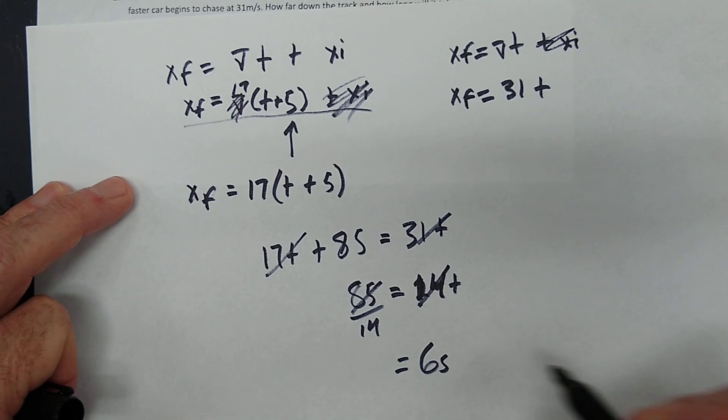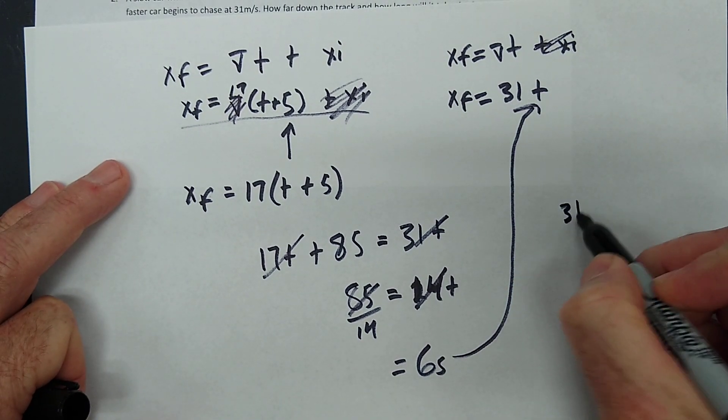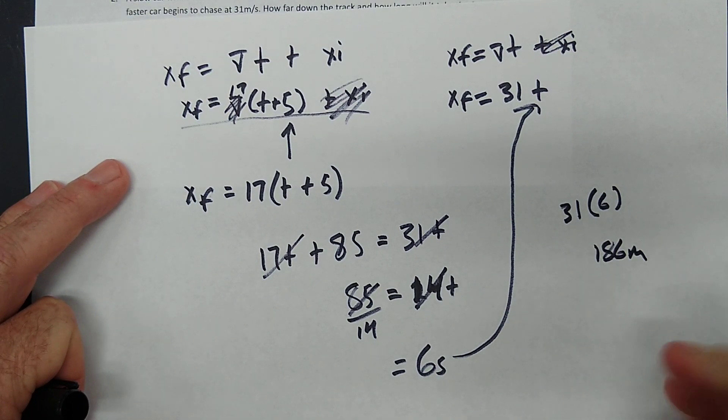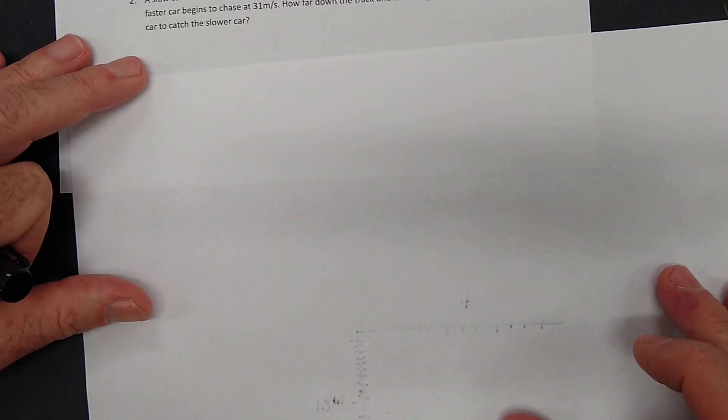And then if we wanted to find out how far down the track this collision occurred, just put 6 seconds into there, 31 times 6, 186 meters down the track. Okay, now I know I'm going quickly. But you've got a couple other ones you can practice after this.